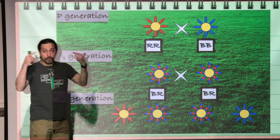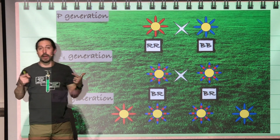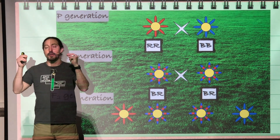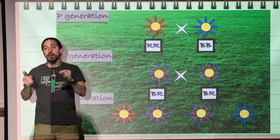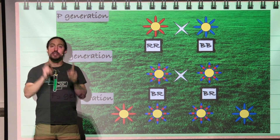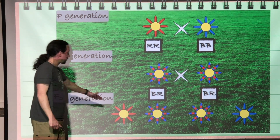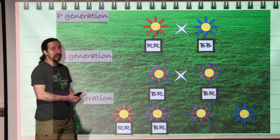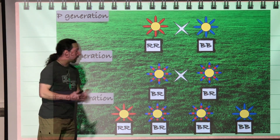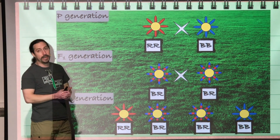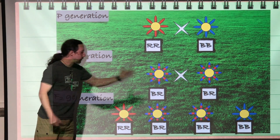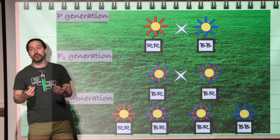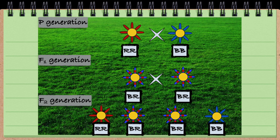We would be able to identify from the way these different flowers look what their genotype is. We could say that the red flowers would have to be homozygous for the red allele, blue and red flowers would have to be heterozygous, and the blue flowers would have to be homozygous for the blue allele.